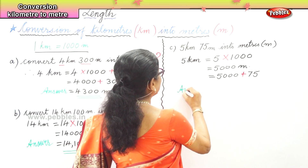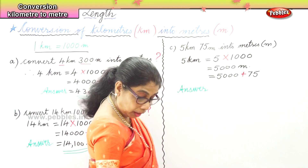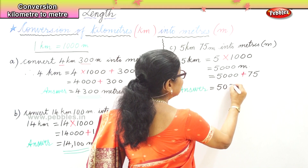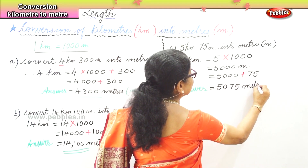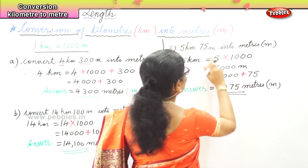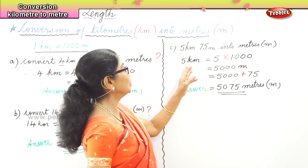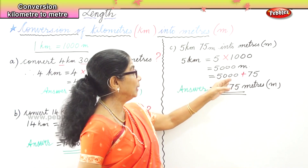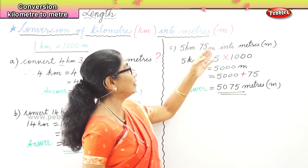Our answer is 5,075 meters. M is our short form. 1 kilometer is 1,000 meters, so 5 into 1,000 gives you 5,000 meters, plus 75. So 5 kilometers and 75 meters gives you 5,075 meters.